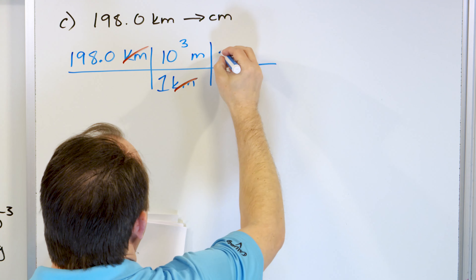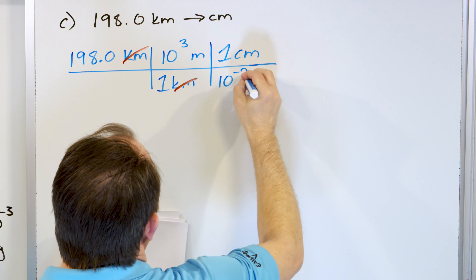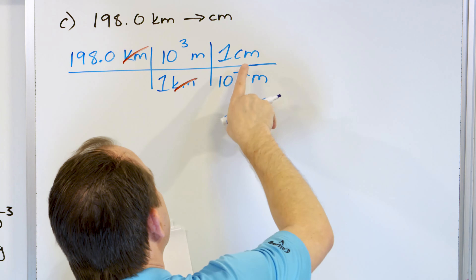I'm going to say that one centimeter is 10 to the minus two meters, or one hundredth of a meter — that's what a centimeter is. Meters cancel, and so I'm left with centimeters. If I take the 198.0 times 1,000 and then divide by 10 to the minus two, I'm going to get 1.980 times 10 to the seven centimeters. That's the final answer. I have four significant digits in my original problem statement, and four significant digits in my answer as well. So that matches.